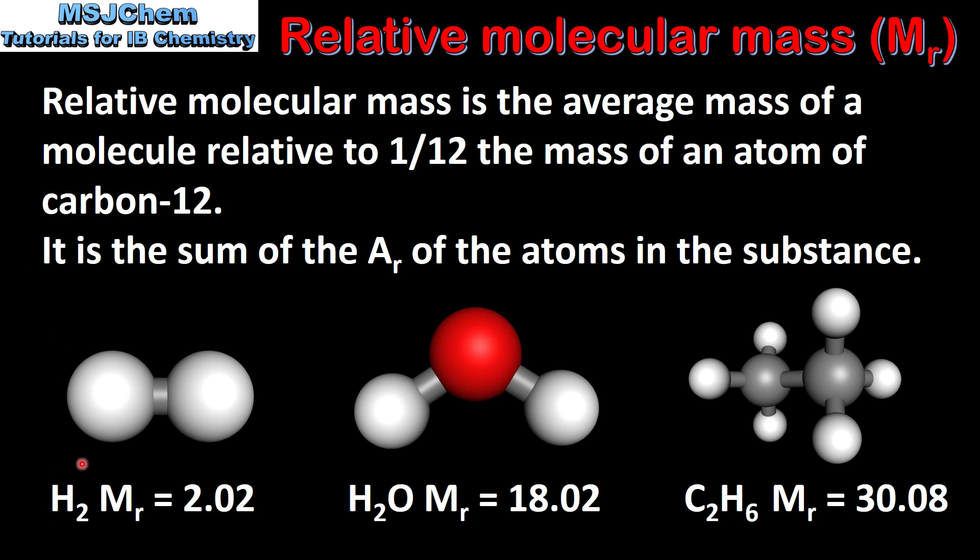We have H2, which is hydrogen gas, H2O, which is water, and C2H6, which is ethane. By adding up the relative atomic masses of the atoms in a molecule of hydrogen gas, we get a relative molecular mass of 2.02. For water we get a relative molecular mass of 18.02, and for ethane we get a relative molecular mass of 30.08. Just like relative atomic masses, they have no units.